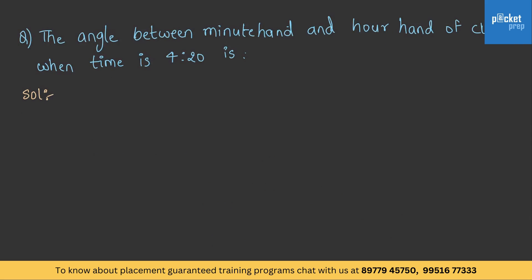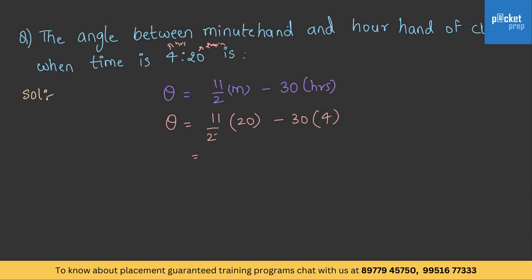Let us consider a similar problem. We know that θ = (11/2) × M − 30 × H. Therefore θ = (11/2) × 20 − 30 × 4 = 110 − 120 = −10 degrees. Since the angle at 4:20 is asked, the sign need not be considered, and therefore the angle at 4:20 is 10 degrees.